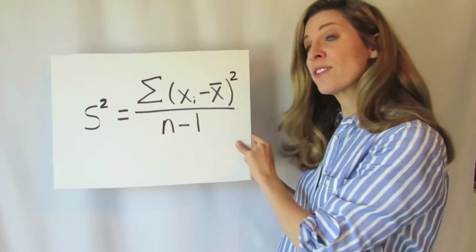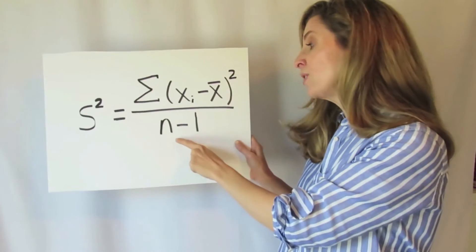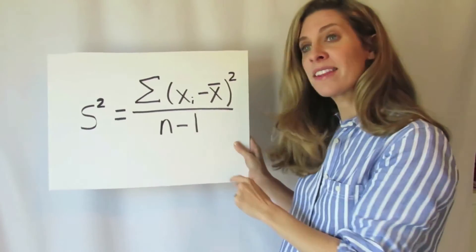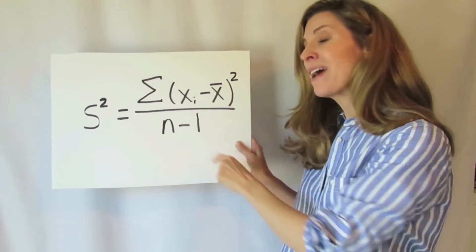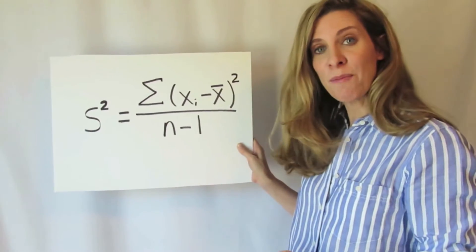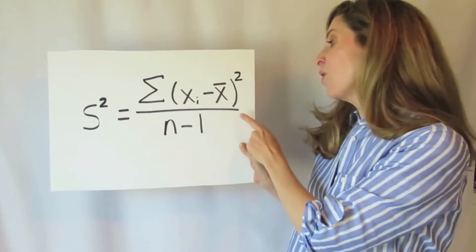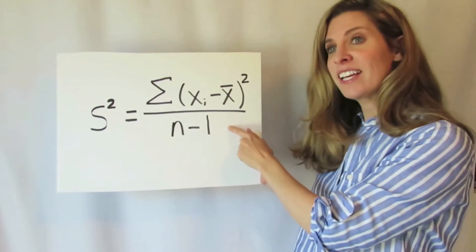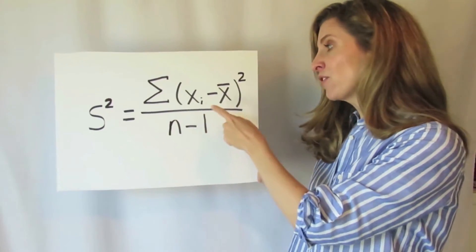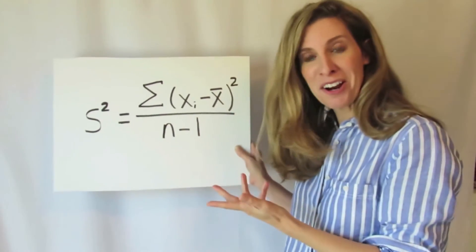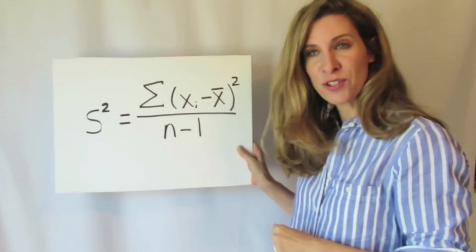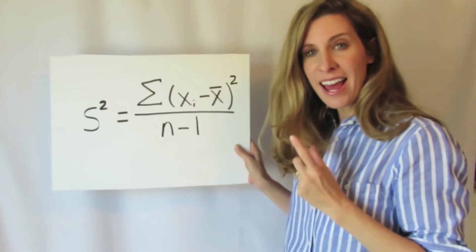For the sample variance, we divide by the degrees of freedom, n minus 1. What this represents is actually the average squared deviations from the mean.